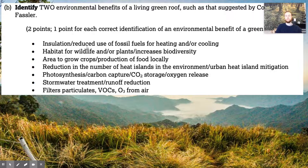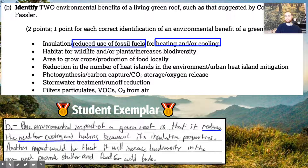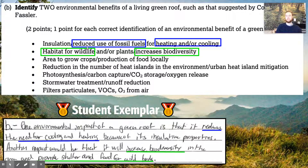We'll now look at the scoring guide and a student exemplar to show how points were earned on this FRQ. The rubric awards a point for reducing the use of fossil fuels used in heating and cooling — the student exemplar specifically uses the phrase 'reduces the need for cooling and heating,' which earns that point. There's another point for noting that a green roof can create habitat for wildlife and increase biodiversity, which the student also earns with very similar language. Notice they used two simple, clear, concise sentences — a great example of earning two points.